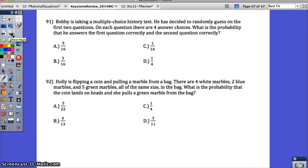Problem number 91. Bobby is taking a multiple choice history test. He has decided to randomly guess on the first two questions. On each question, there are four answer choices. What is the probability that he answers the first question correctly and the second question correctly? So what's the probability of getting a correct and another correct? What's his chance of just guessing the correct answer on the first one? There are four different outcomes, so that's your total, and only one of them are going to be correct. What's the probability of getting the second question correct? Well, it's the same thing. There's still four different answers he could choose from. Only one will be correct. Whenever you have an and probability, you should multiply. So you should have 1 fourth times 1 fourth, which gets you 1 sixteenth. The probability would be C.